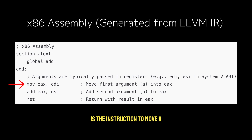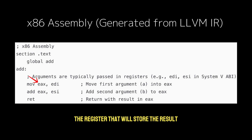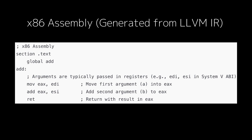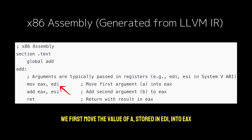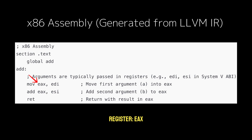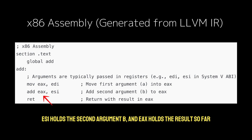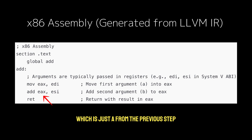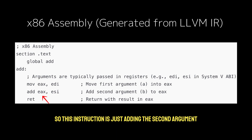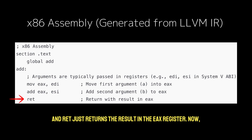The instruction `mov EAX, EDI` moves the 32-bit value from EDI, which holds the first argument A, into EAX — the register that stores the function's return value in x86-64. This copies A into the return value register. The next instruction, `add EAX, ESI`, adds the value in ESI (the second argument B) to EAX (which currently holds A), computing A+B. Finally, `ret` returns the result stored in EAX.